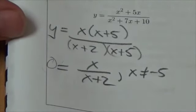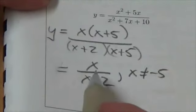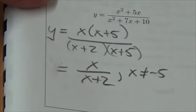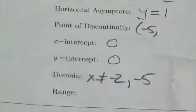Likewise, to get our y intercept, I make x equal to 0, which is 0 divided by 0 plus 2, or 0 divided by 2, which is again y intercept is 0.